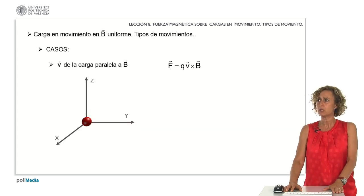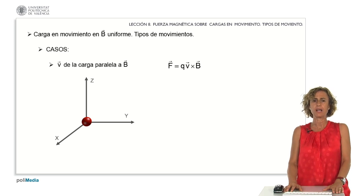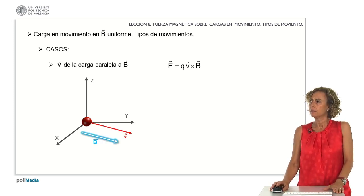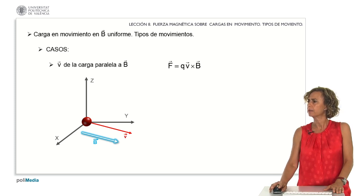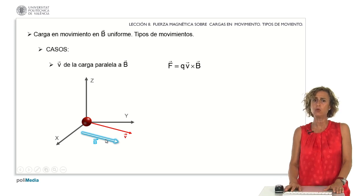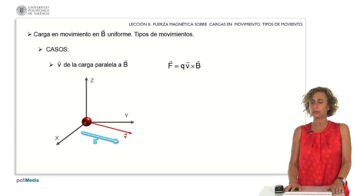We will start with the case where the velocity of the charge is parallel to the magnetic field, that is, v parallel to B. When v aligns parallel to B, the force becomes zero due to the vector product of these two vectors.